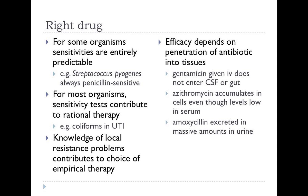The drug must also get to where it needs to be active. Gentamicin given intravenously doesn't get into the gut or cerebrospinal fluid, so it won't help with gut-related infection or meningitis. Conversely, azithromycin accumulates inside cells, making it more effective than serum levels suggest. Amoxicillin given for UTI achieves much higher levels in the urine than in serum. Patient factors also matter: allergy is a particular problem, especially with penicillins — about 10% of people are said to be allergic, though many report reactions that are not true allergy. There's also a characteristic rash with ampicillin in patients with glandular fever or lymphoma that is not a penicillin allergy.